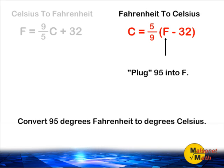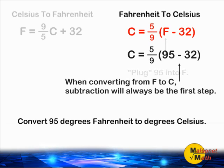First, you take the degrees given in Fahrenheit and plug it into the variable F, which stands for Fahrenheit. When converting from Fahrenheit to Celsius, our step is always going to be to subtract the degrees given in Fahrenheit and 32 degrees.